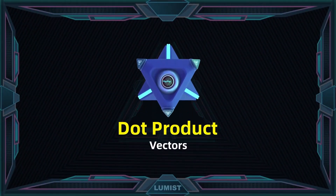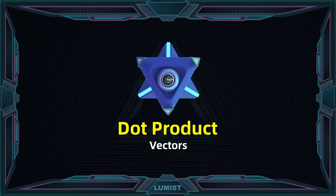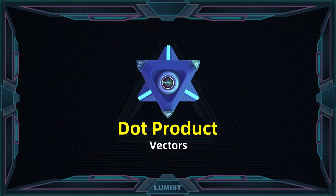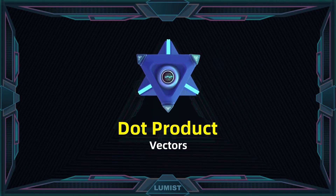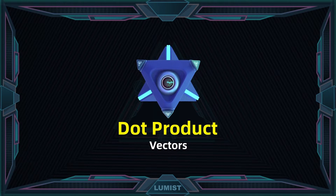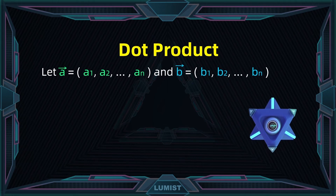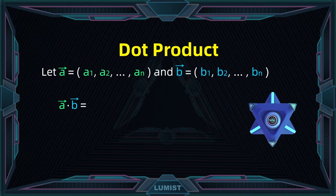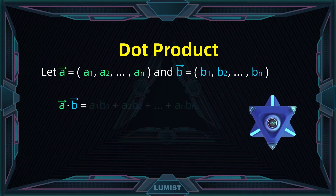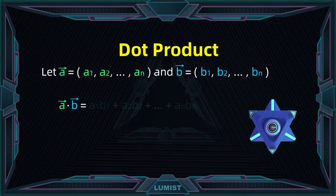Welcome to Lumi. Today we will talk about a special vector operation known as the dot product. The dot product can be understood as a certain way of multiplying two vectors together, and it deals heavily with the angle formed by the two vectors. For two vectors a and b of the same dimension, their dot product is defined as the sum of multiplying each corresponding entries of a and b together.